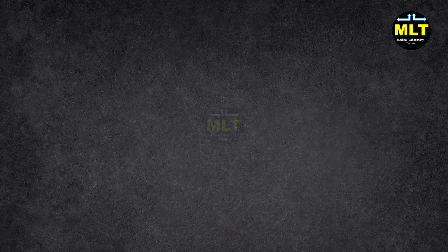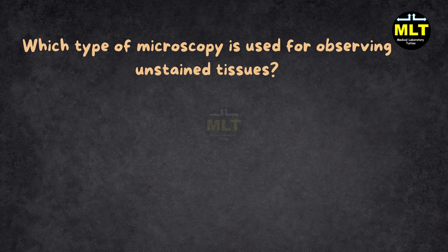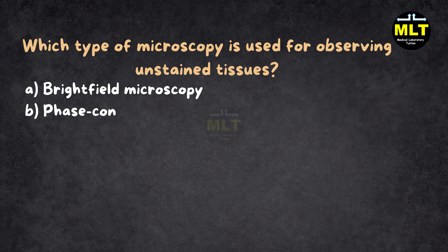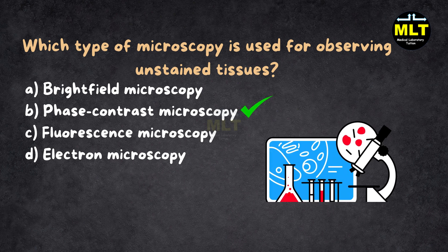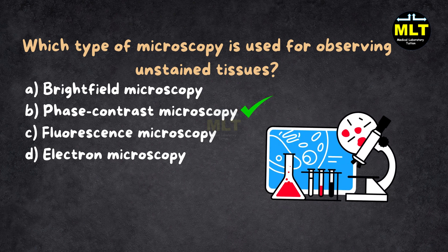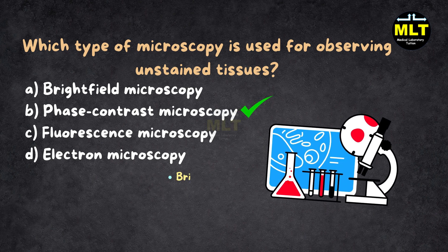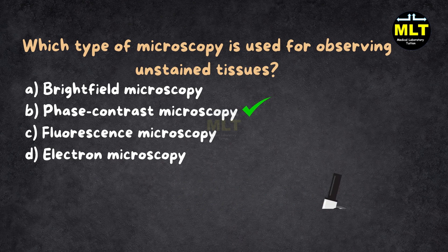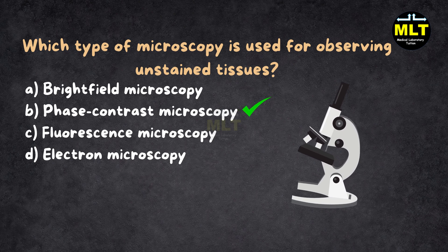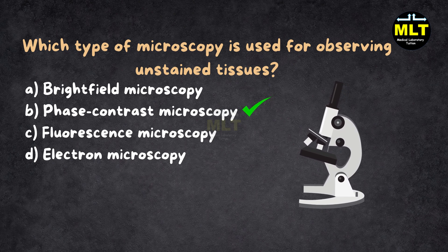Question 8: Which type of microscopy is used for observing unstained tissues? Options: A. Brightfield microscopy, B. Phase contrast microscopy, C. Fluorescence microscopy, D. Electron microscopy. Correct Answer: B. Phase contrast microscopy. Explanation: Phase contrast microscopy reveals the beauty of unstained tissues by enhancing contrast. Brightfield needs stains, fluorescence lights up specific molecules, and electron microscopy dives into ultrastructures. For natural views, phase contrast is the way to go — like seeing your tissue in its natural state, no makeup needed.